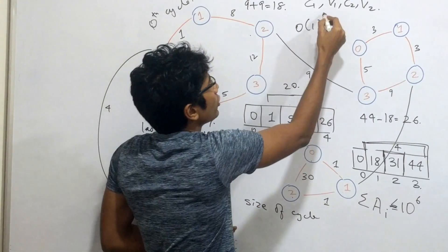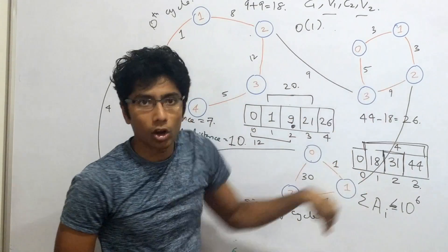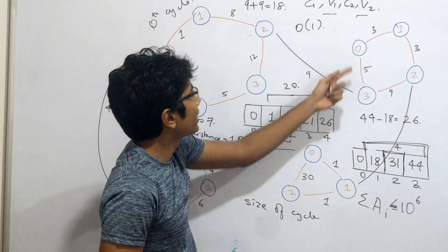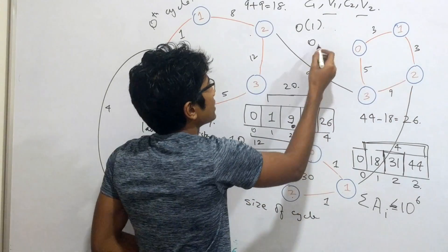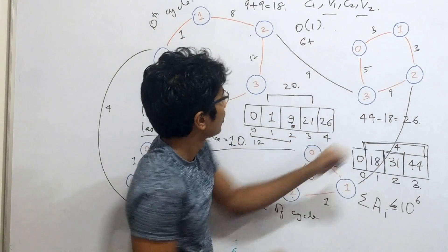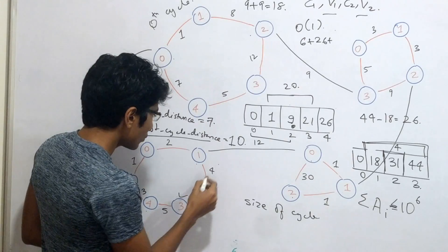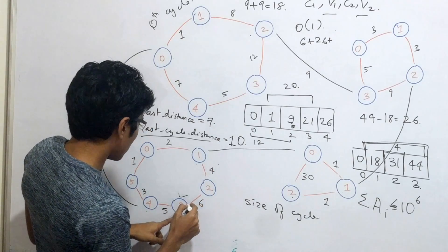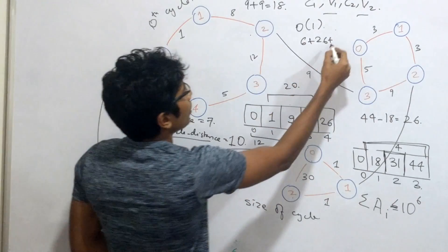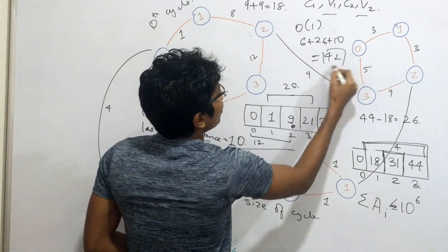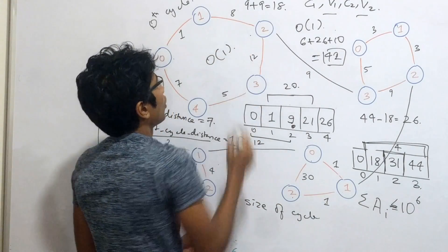For example, if V1 is 0, getting to the end of cycle 1 takes 3 plus 3 = 6. If V2 is 3 in the target cycle, then the within-cycle distance is min(clockwise, anticlockwise) — here 10 is smaller than 11. So the total clockwise answer is 6 plus 26 plus 10 = 42. You can compute this in O(1) time.